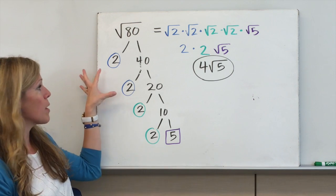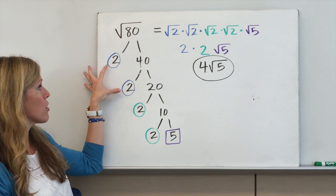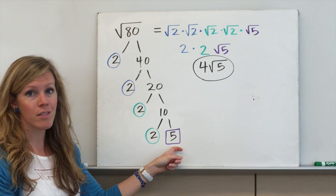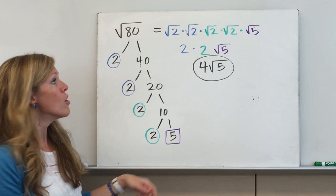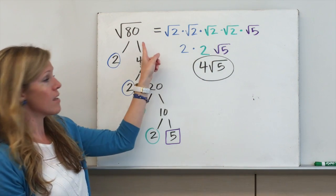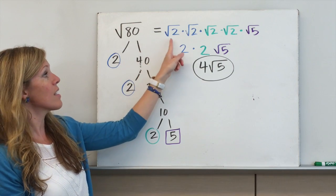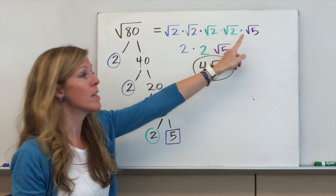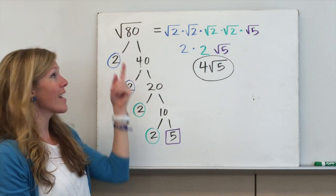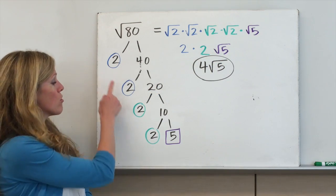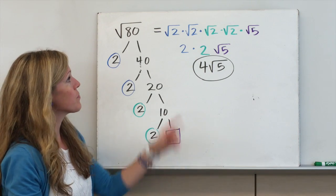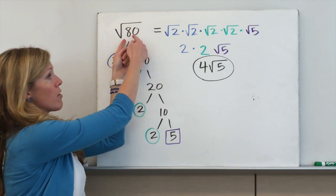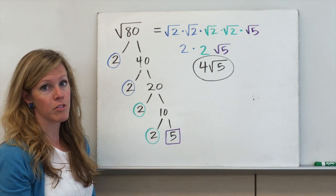After I do the prime factorization, I'm going to find pairs of the same number. So here I've got a pair of 2s, I have another pair of 2s, and then I've boxed this 5 because it's not a pair — it's just by itself. So I'm going to rewrite this: the square root of 80 equals the square root of 2 times the square root of 2 times the square root of 2 times the square root of 2 times the square root of 5. You can split square roots or radicals, multiply them, and they'll still equal the one bigger radical that you started with.